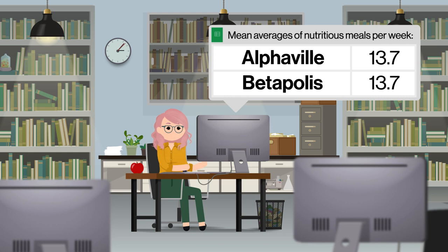But the fact that the numbers are so close doesn't line up with what Ashley knows, given Alphaville's recent campaign and Betaopolis' famous market. She suspects that even if the means are the same, there will be a lot of families in Alphaville who fall well above and below that mean — people who have many more, or crucially fewer, than average meals. Basically, how the data is dispersed could be different in each city.